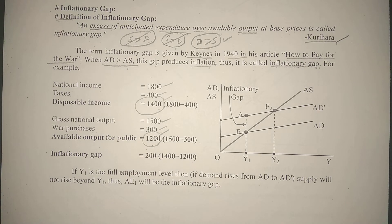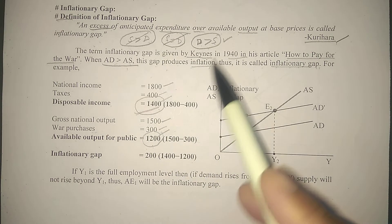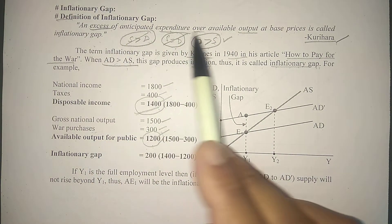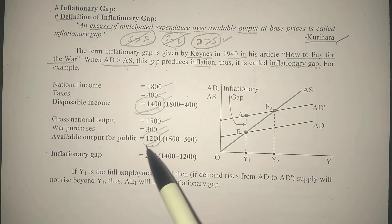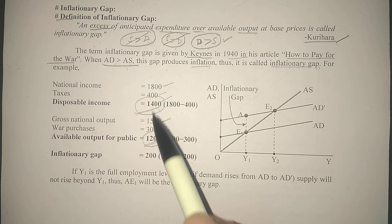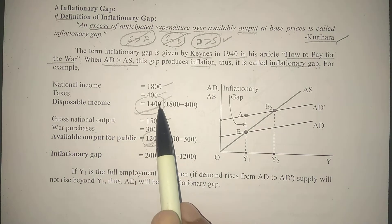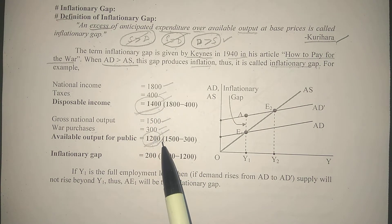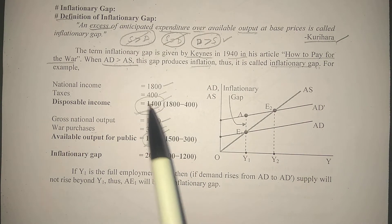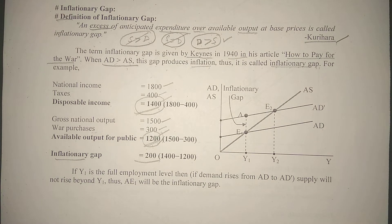तो जैसे कुरिहारा ने बताया था — anticipated expenditure 1400, excess over available output 1200. Expenditure होगा 1400 का, but जो output available है that is 1200. So 200 का जो खर्चा ज्यादा शो हो रहा है, ये demand ज्यादा शो करेगा supply से। तो ये जो 200 का gap है, that is known as the inflationary gap.